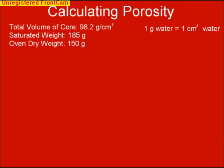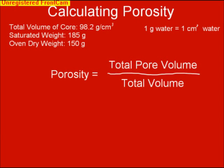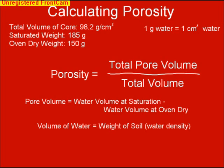Porosity is defined as the total pore volume divided by the total volume. This is convenient because we can calculate the total pore volume from the information we already know. Pore volume is water volume at saturation minus water volume at oven dry. We have weights and need to convert weight into volume — in this case it's a 1 to 1 ratio.